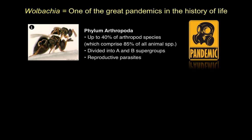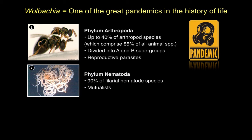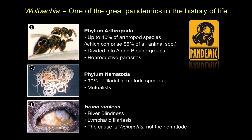Wolbachia are also in filarial nematodes, where they act as mutualists required for oocyte production and larval development. In the last decade, we've learned that diseases associated with filarial nematodes — including river blindness and lymphatic filariasis — are not caused by the nematode itself but by the Wolbachia symbionts inside them. The acute inflammatory response is to Wolbachia, not the nematode. Our program is now trying to develop anti-Wolbachia drugs to effectively treat these conditions — a good case where basic science has translated to biomedical application within a decade.